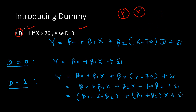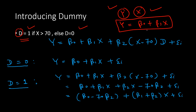We will introduce a dummy variable. We name it d, which takes a value of 1 if x is greater than 70, else it takes a value of 0. Here x is the independent variable and y is the dependent variable. We'll modify the simple linear regression equation — initially we had y = β₀ + β₁x. We keep the first part as is and introduce a second term to the equation using the dummy variable. We add another term β₂ · (x − 70) · d. The dummy variable takes a value of 1 if x > 70, else 0.